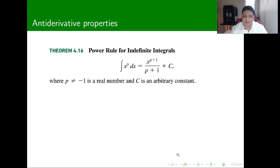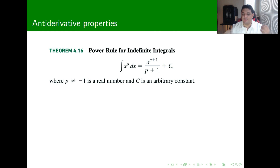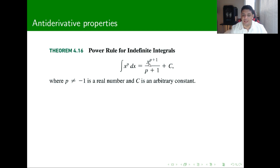Let's take a look at an example and start with the basics. The most easy derivative was the power rule: when we take a derivative, we put down the exponent p and then subtract 1. For anti-derivatives, we do the opposite — instead of multiplying by the exponent, we divide by the exponent plus 1, and we add 1 to the exponent as well. So the anti-derivative of x squared is going to be x cubed divided by 3, and so on.